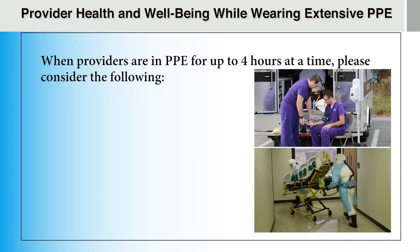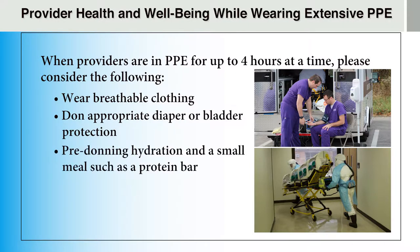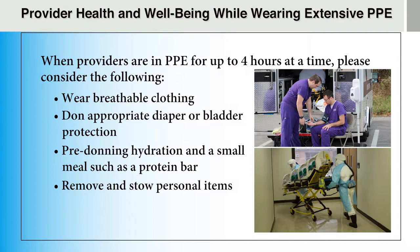When providers are in PPE for up to four hours at a time, please consider the following. Providers should wear breathable clothing and don the appropriate diaper or bladder protection. Before donning PPE, providers should drink at least 8 ounces of water, eat a small meal such as a protein bar, and use the restroom if possible. Finally, providers must remove and stow all personal items such as rings and watches and pull back long hair. If a provider wears glasses, they should be secured with a neck strap behind the provider's head.